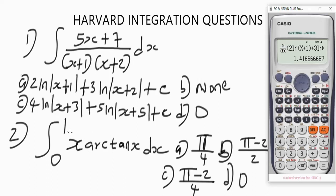Now let's solve one more question. Question 2 looks tough but is actually very simple. I'm going to show you how to represent arctan on the calculator — I haven't solved this kind of question before involving arc functions, so that's the importance of this video. Question 2 is definite integration — it has upper and lower limits. For definite integration you go straight to inputting it. Press the definite integral symbol, input the upper limit as 1 and the lower limit as 0.